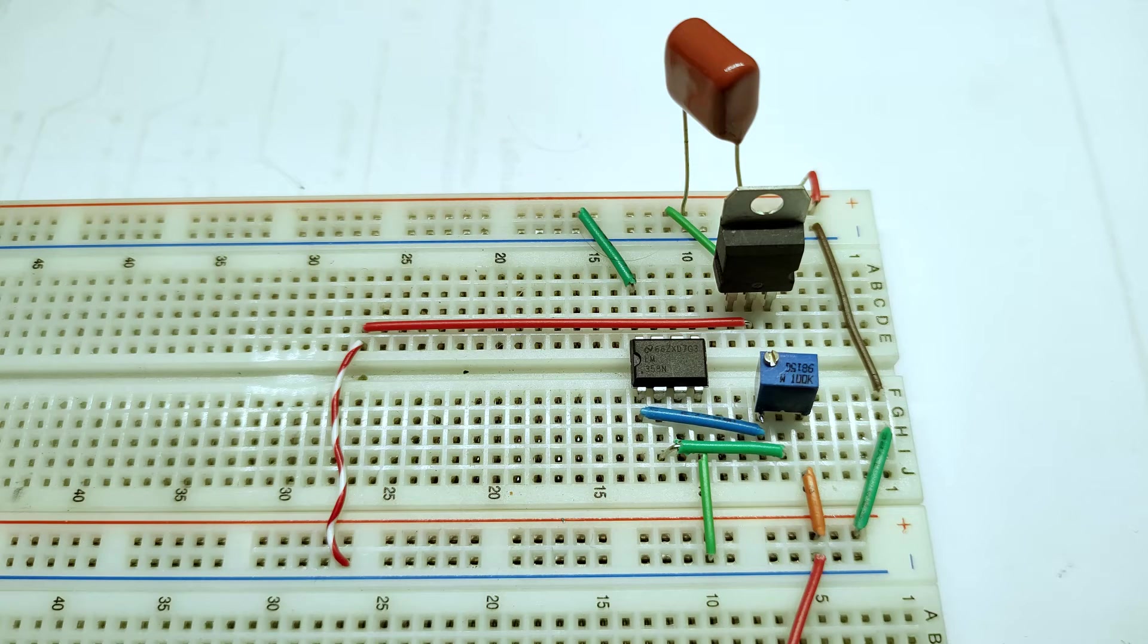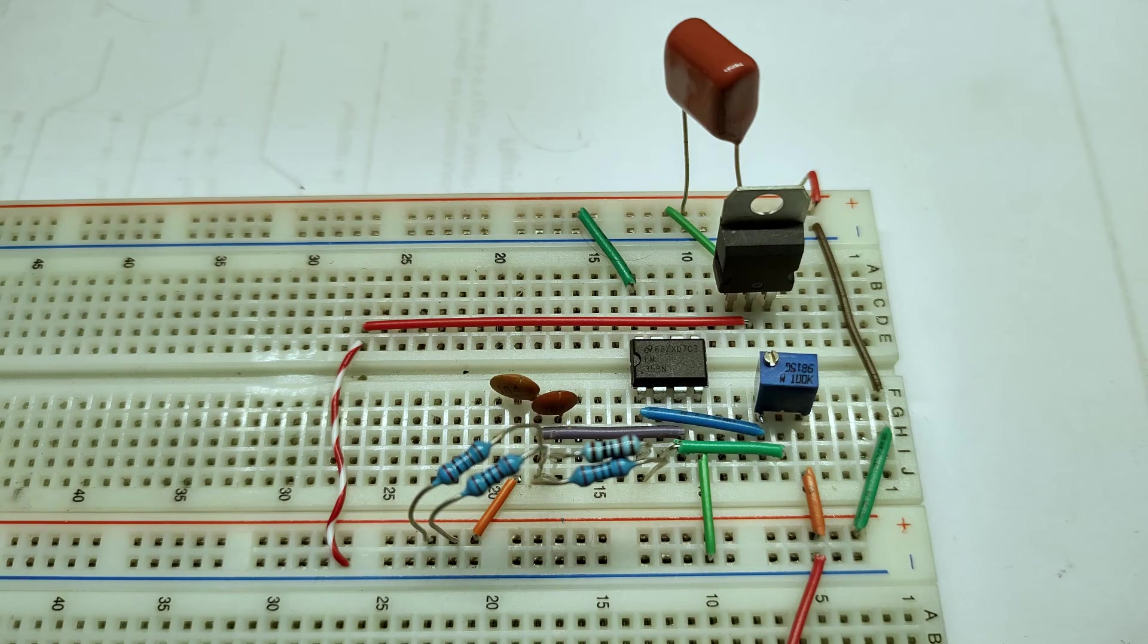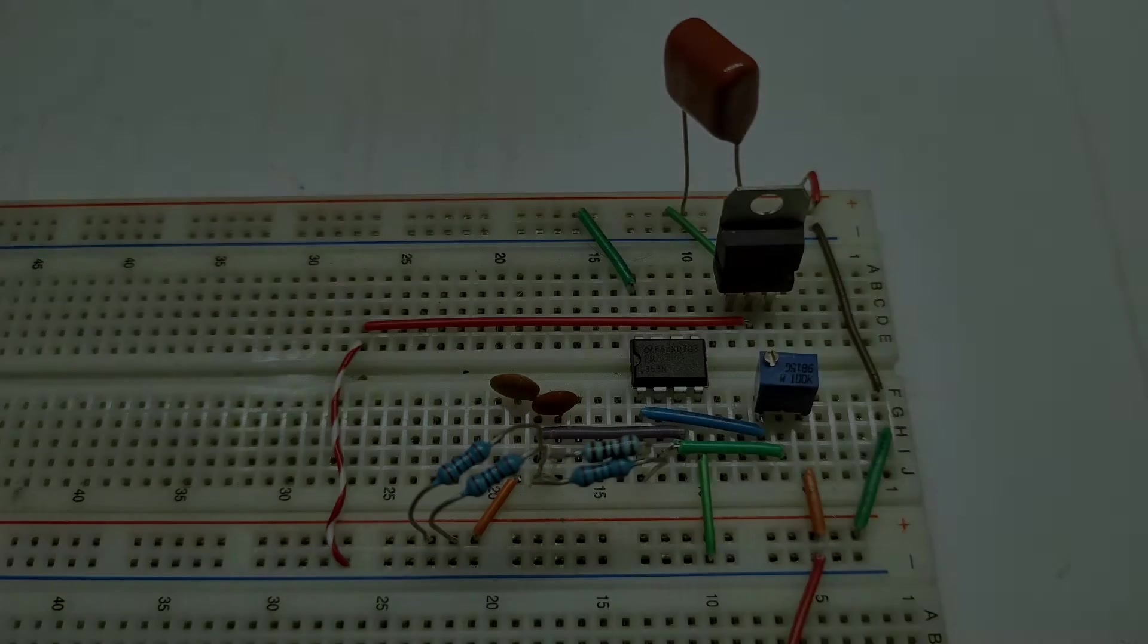After that we can add the resistors and capacitors. Remember that the resistors have to have the same value and the same goes for the capacitors. Because I didn't have 470 ohm resistors, I put a double one kilo ohm in parallel to make a 500 ohm resistor.